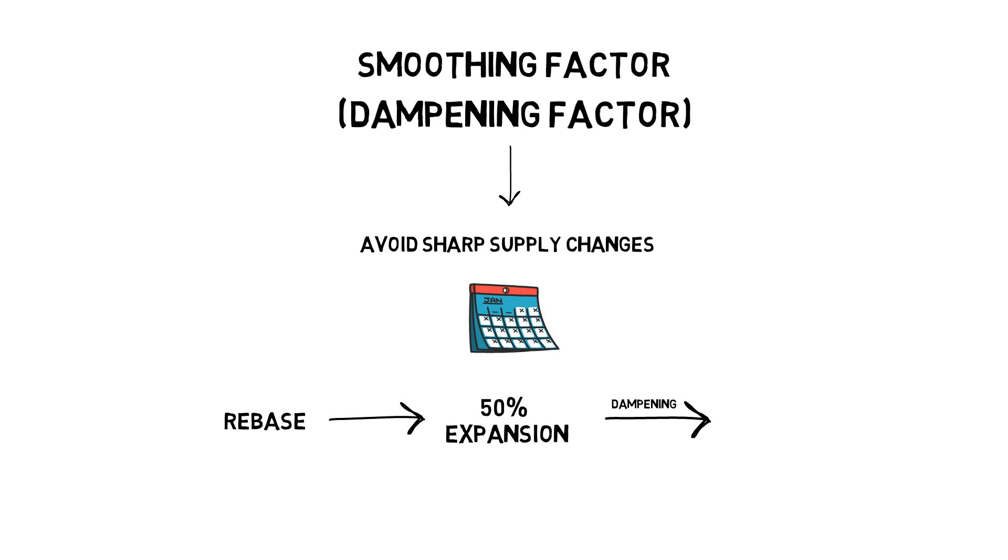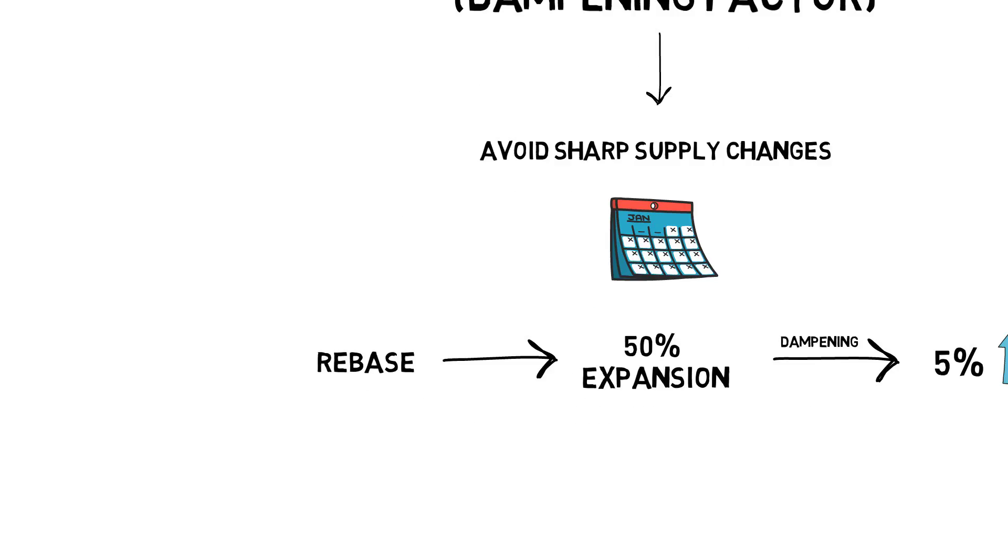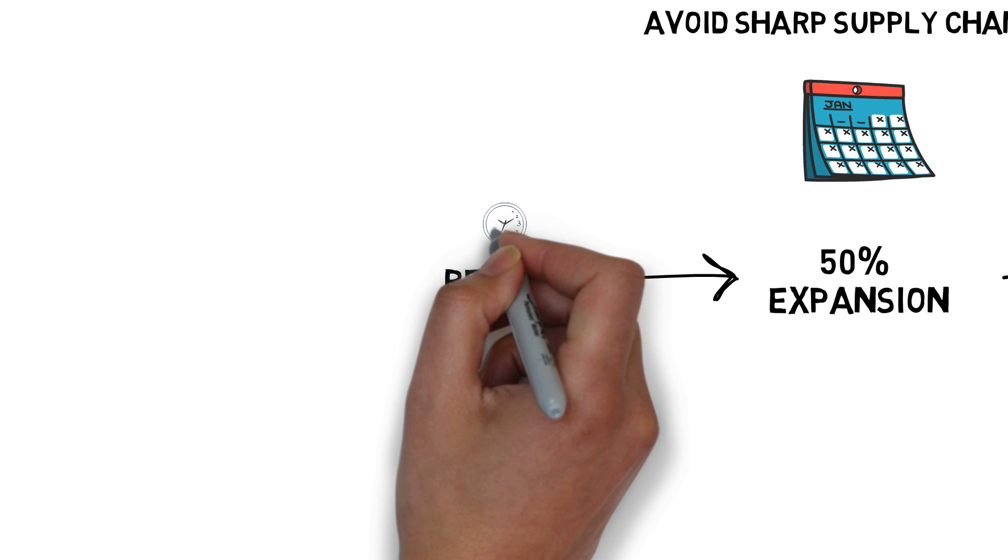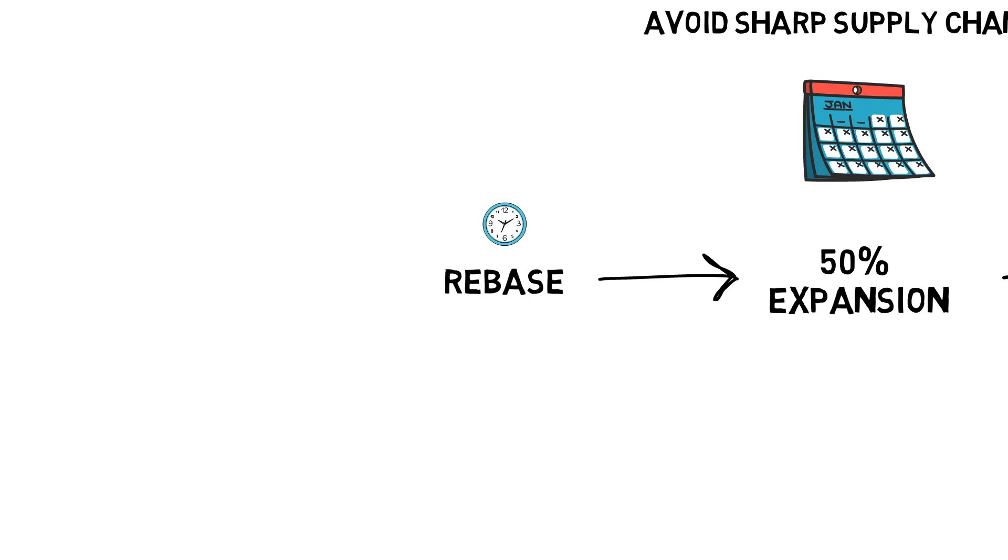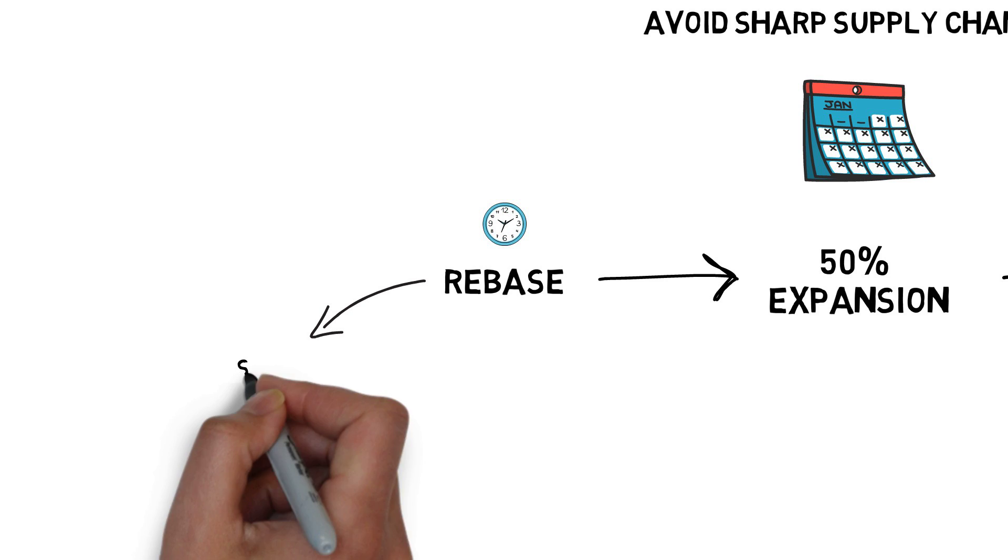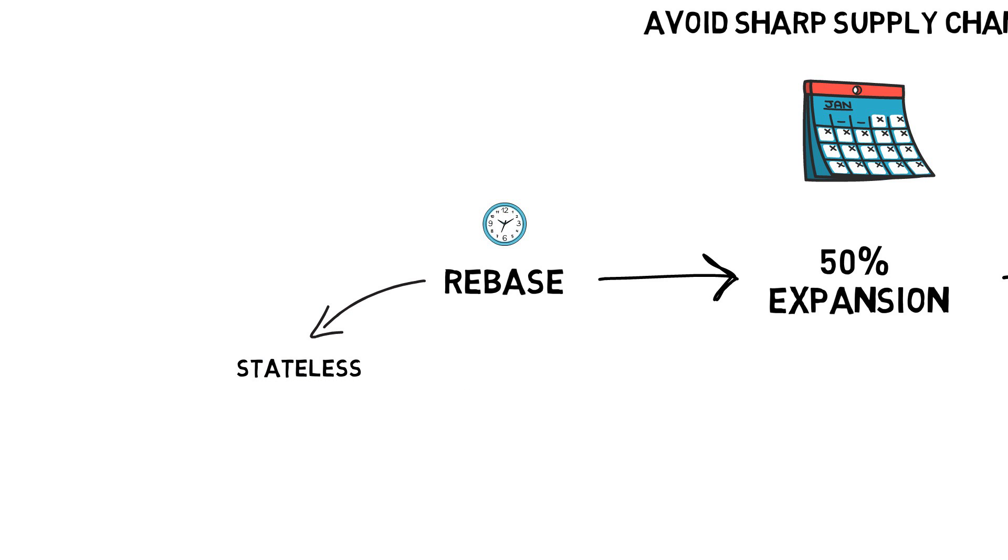The rebase function is executed no more than once every 24 hours. This operation is also stateless, meaning that the protocol has no memory of the previous day's supply change. So it has to recompute the potential supply change every day based on the latest information.